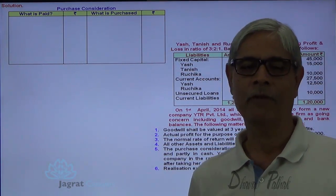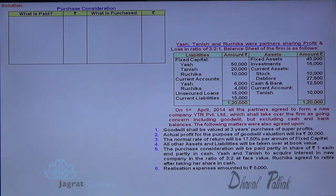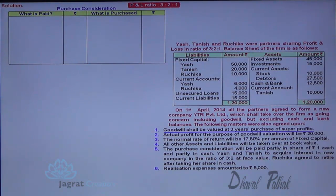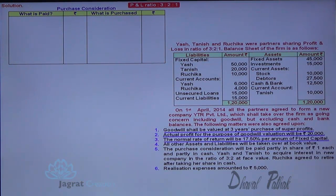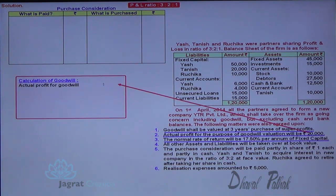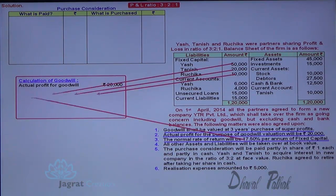The profit sharing ratio is 3 to 2 to 1. Goodwill is valued at 3 years' purchase of super profit. To find the super profit I need the actual profit potential of the firm, which is 20,000. The normal rate of return is 17.5% per annum on fixed capital. Let me prepare the working note: actual annual profit potential is 20,000, and expected normal return is 17.5% of fixed capital.